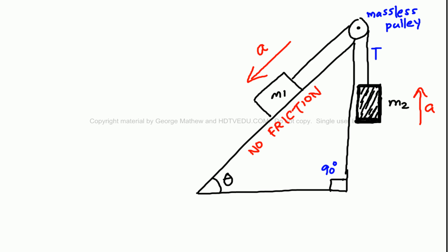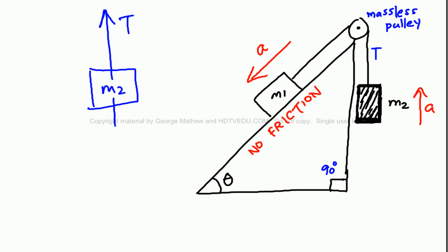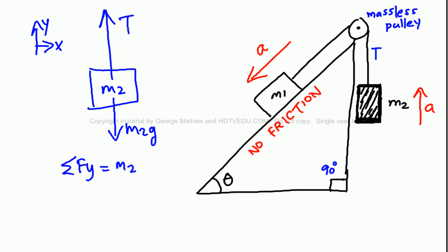For mass M2, it is accelerating up, so we expect the tension to be greater than the gravitational force M2g. The net force along the vertical equals M2A, so we say T minus M2g equals M2A.